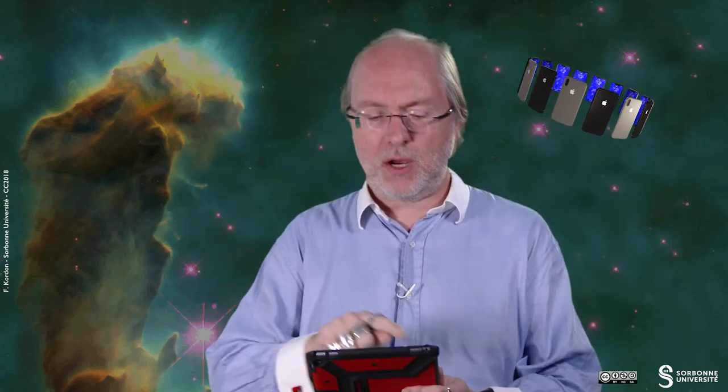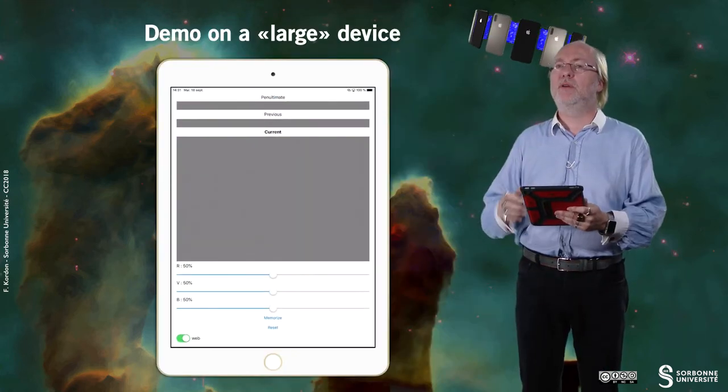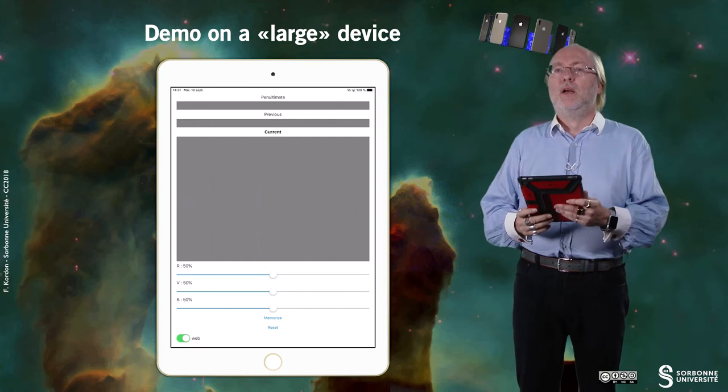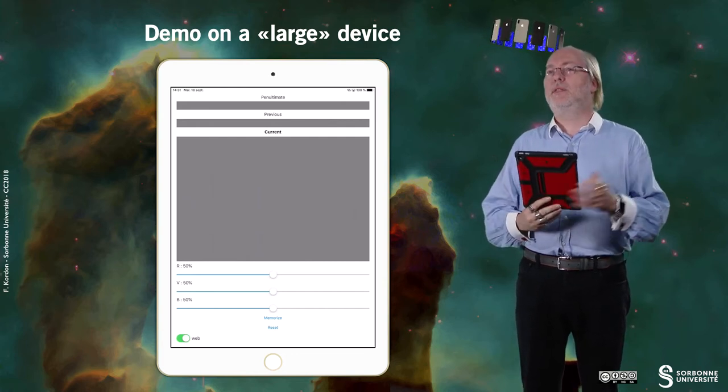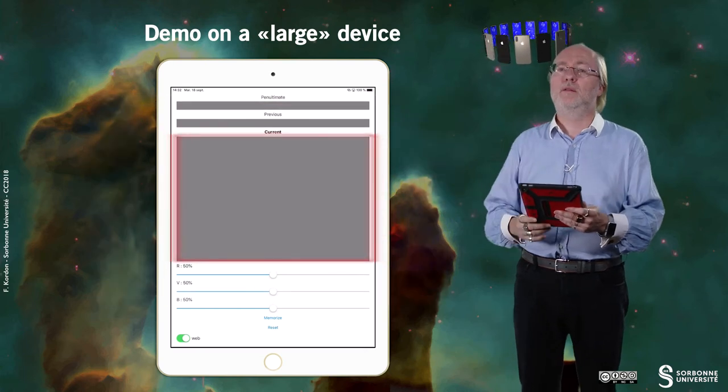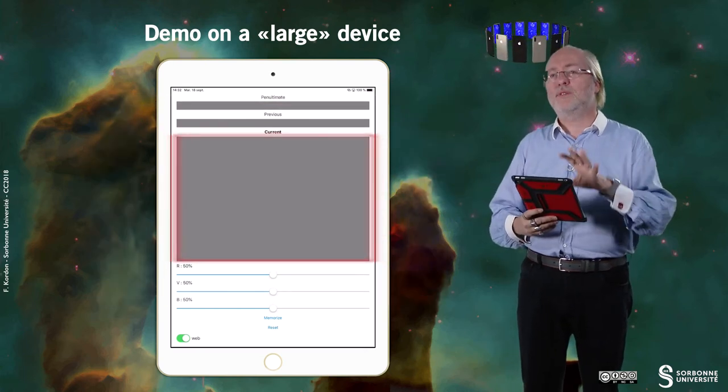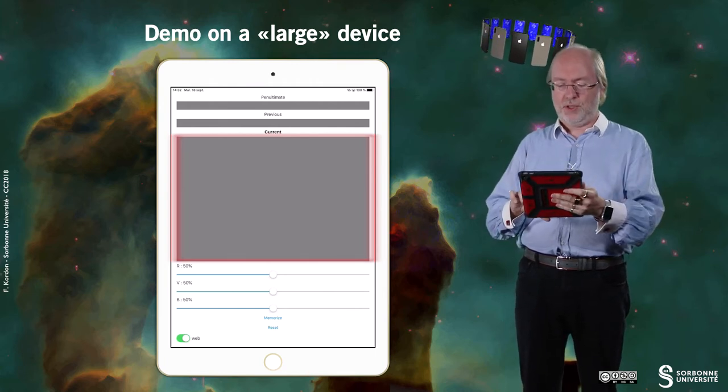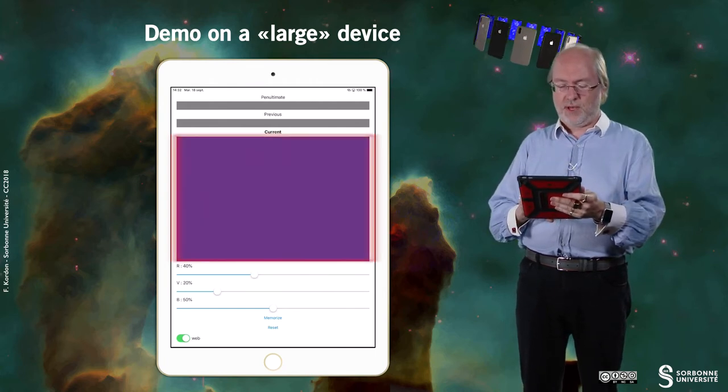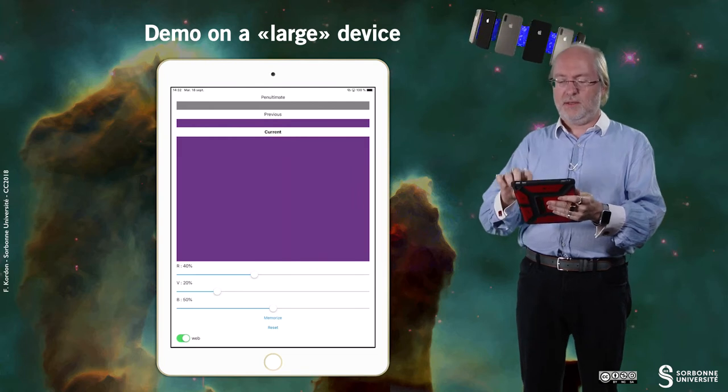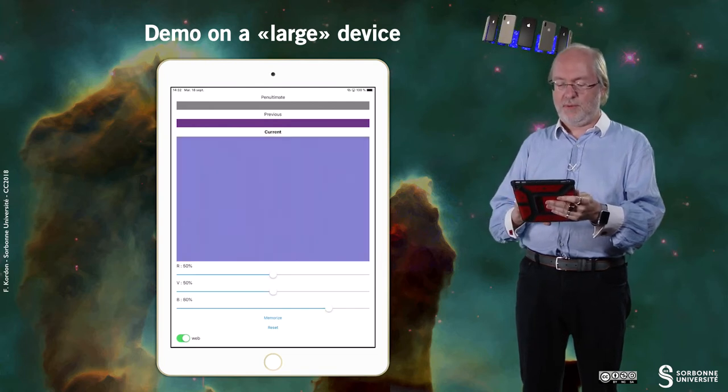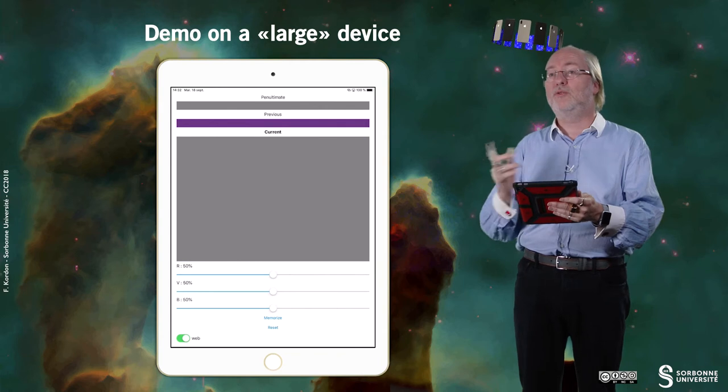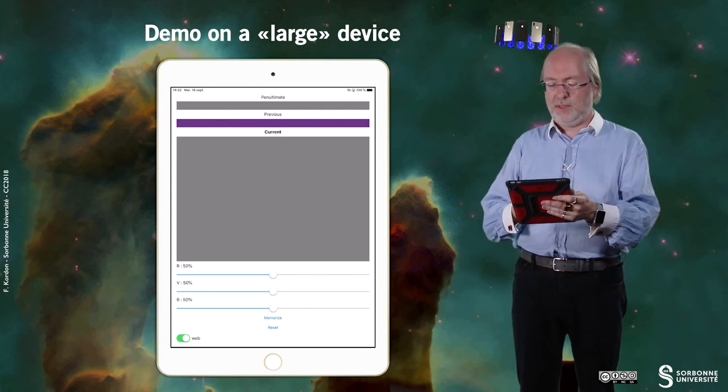Let's have a look now on how the application behaves on a large device. So here, it's similar. I use the current area to have something that is not empty. And of course, it should behave the same way. Memorize, if I reset, I remember the previous color, reset goes back to the mid color.